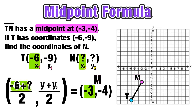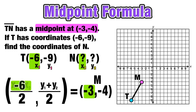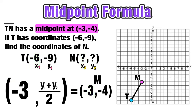Starting with the x-coordinate of the midpoint at negative 3: we know that negative 6 plus some unknown number, divided by 2, must equal negative 3. Solving algebraically, the unknown number is 0, since negative 6 plus 0 is negative 6, and negative 6 divided by 2 equals negative 3. This confirms the x-coordinate, and we know the x-coordinate of endpoint N is 0.